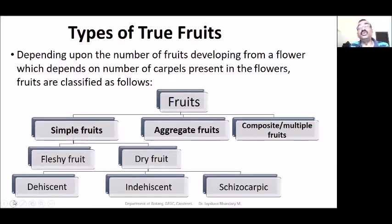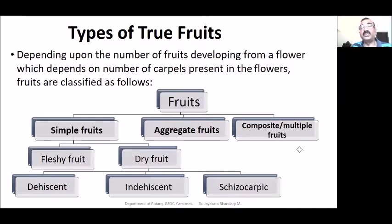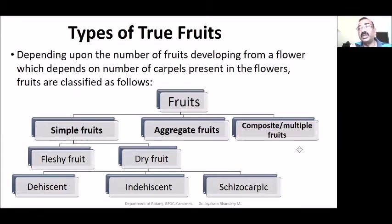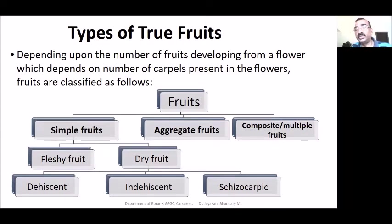Coming to the types of true fruits: depending on the number of fruits developing from a flower, which in turn depends on the number of carpels present in the flower, fruits are classified into different types. There are three basic types: simple fruit, aggregate fruit, and composite or multiple fruit.